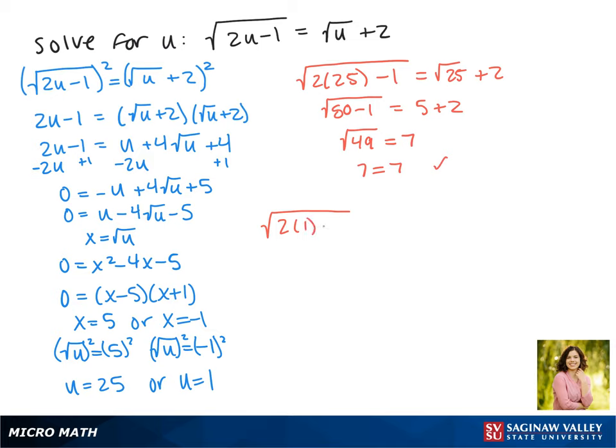Now checking 1, we're going to plug that back into our equation. So on the left we get the square root of 2 minus 1, and on the right we get 1 plus 2, and 1 does not equal 3, so 1 is not a solution. The solution to our equation is u equals 25.